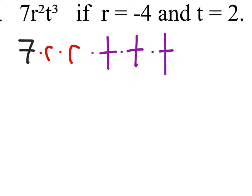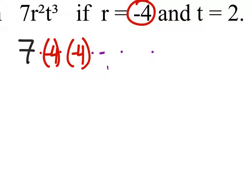Now from the problem we can see that r is negative 4, so I can go in there and replace both r's with negative 4. Then I can go in and replace all three of these t's with its value, which it tells us is 2. So I have 2 times 2 times 2.